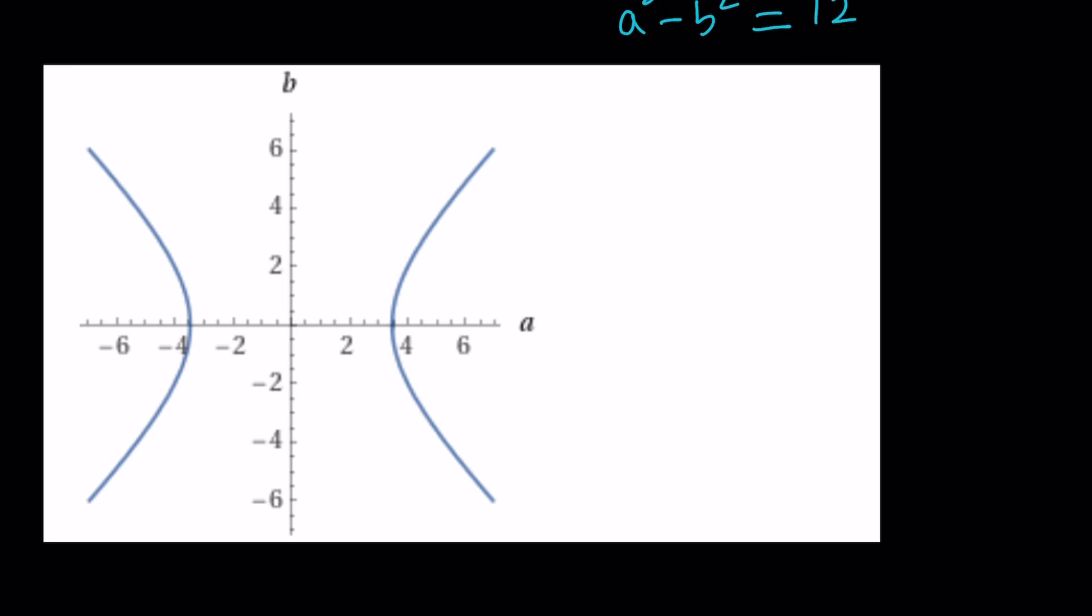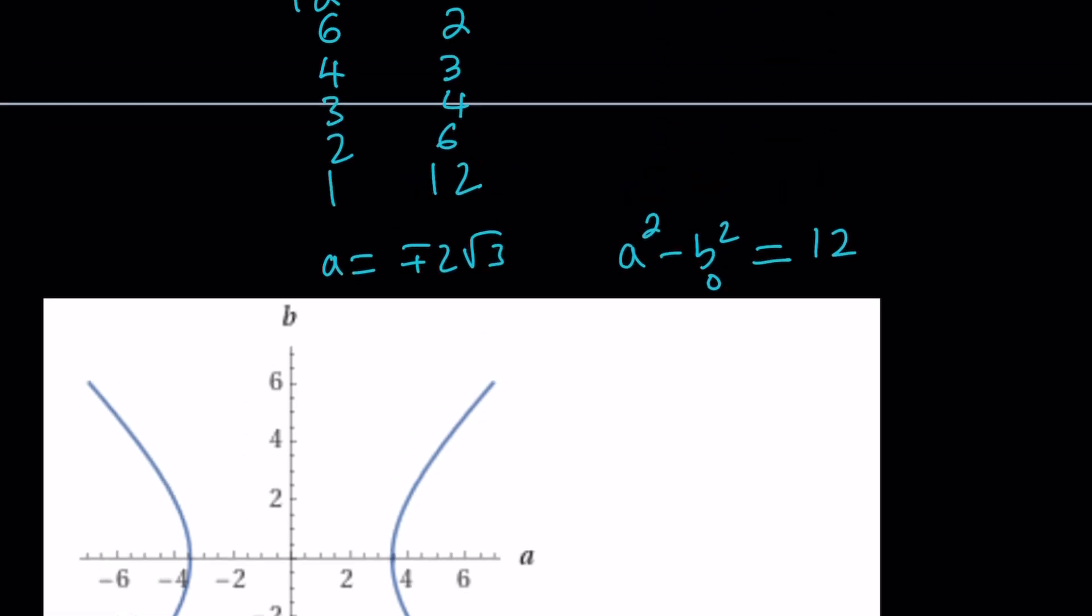And then from there, if you set B equal to 0, you're going to get A squared equals 12. So A will be plus minus 2 root 3. So those are the values that you are seeing in the picture, which is about 3.4-ish. Anyways, let's go ahead and consider each one of these cases.